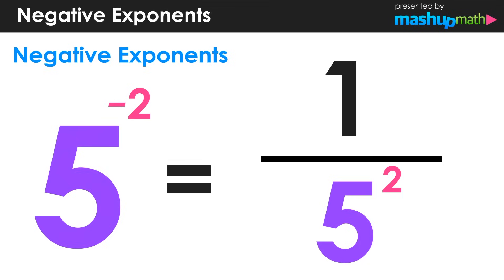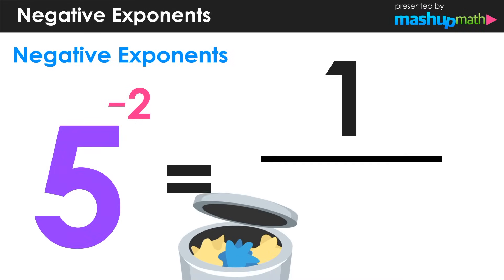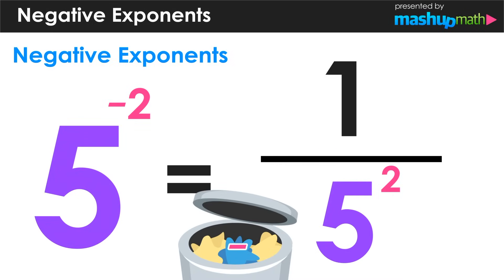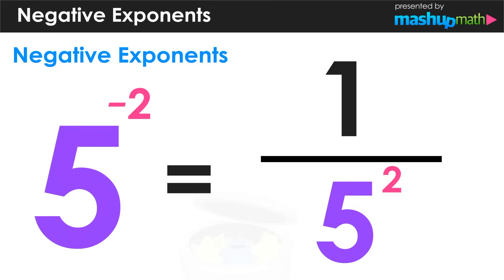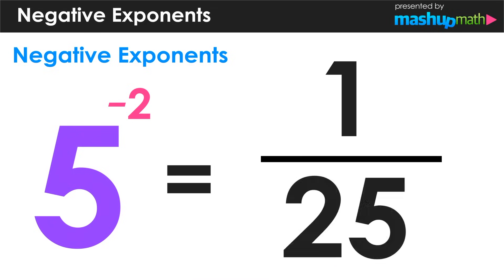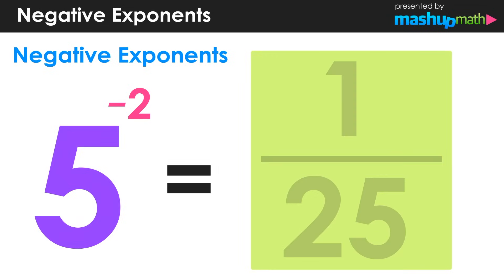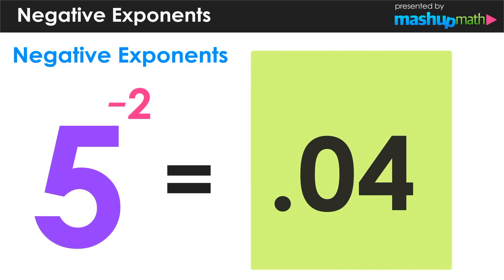Let's see that again one more time. And since we know that 5 squared is equal to 25, we can conclude that 5 to the negative second power is equal to 1 over 25 or 0.04.